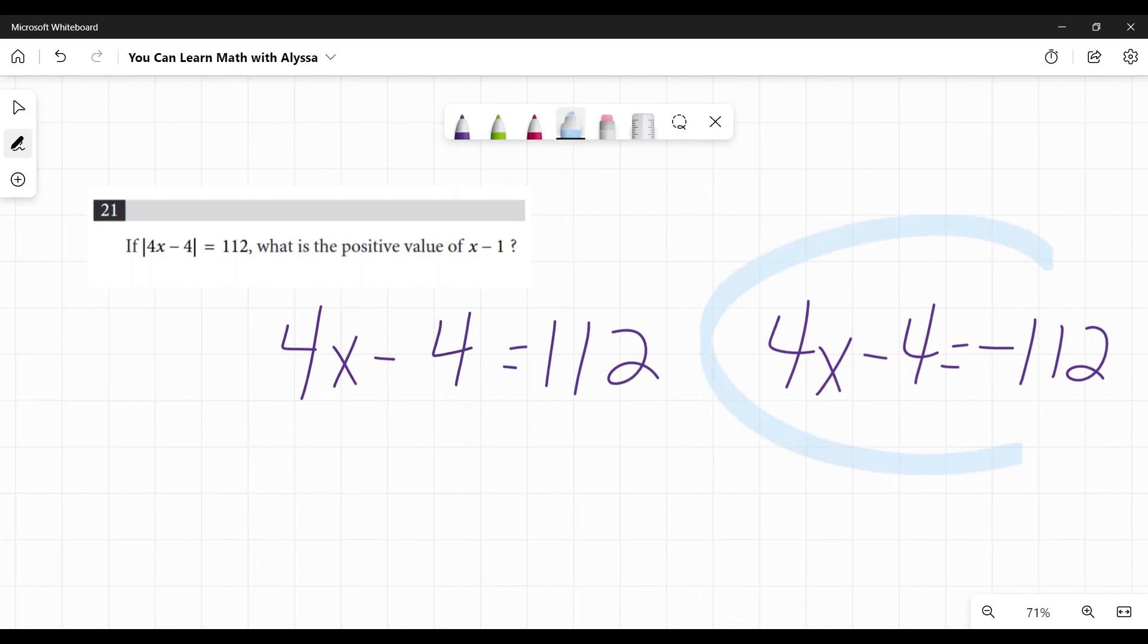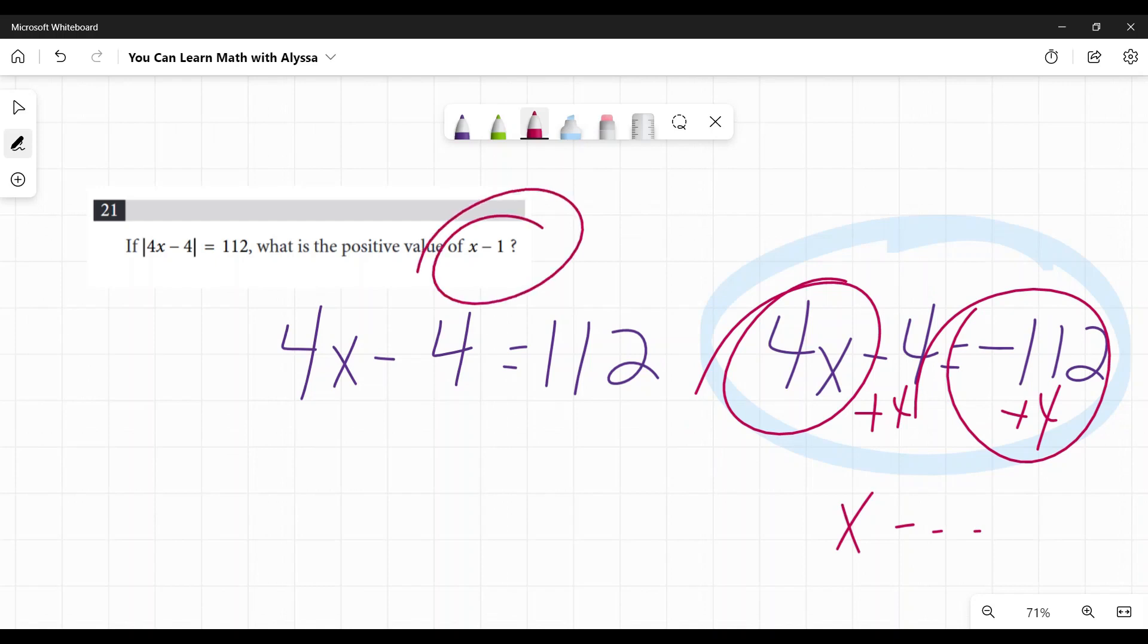Well, if you look over here, the negative 112, if you want to go through and see it, that's totally fine. When I'm looking at it, I first thought, wait a minute. If I add 4 to both sides, this is still going to be negative over here. And if I divide by 4, I'm going to get x is a negative answer. And if I get a negative x and then I subtract 1, it's going to be still negative.